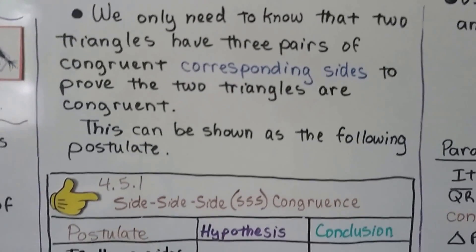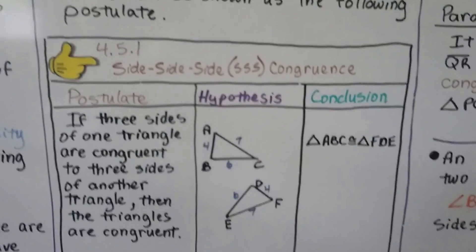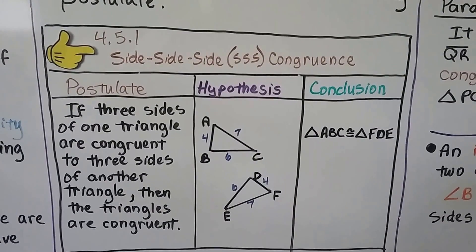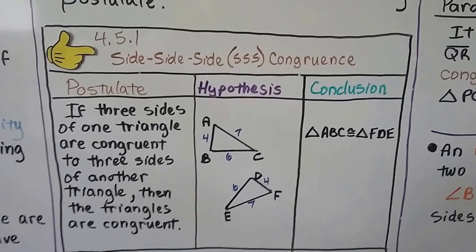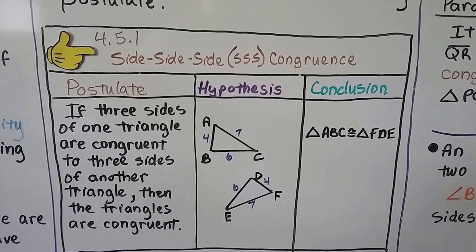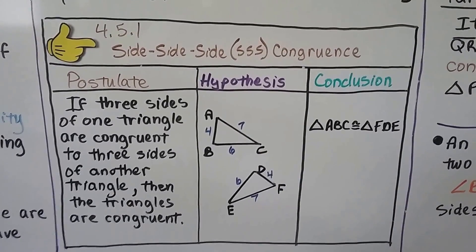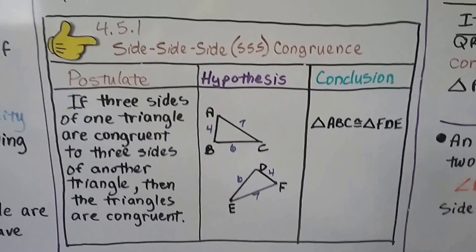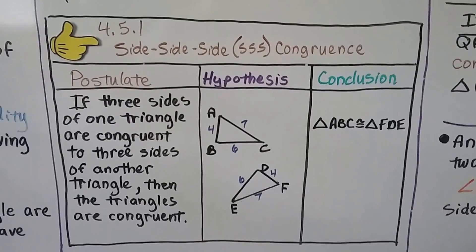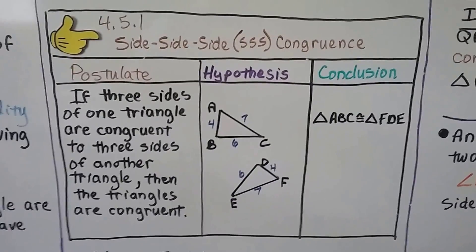And this can be shown as the following postulate. This is side, side, side — shortened as SSS congruence. We have a postulate, a hypothesis, and a conclusion. The postulate says if three sides of one triangle are congruent to three sides of another triangle,